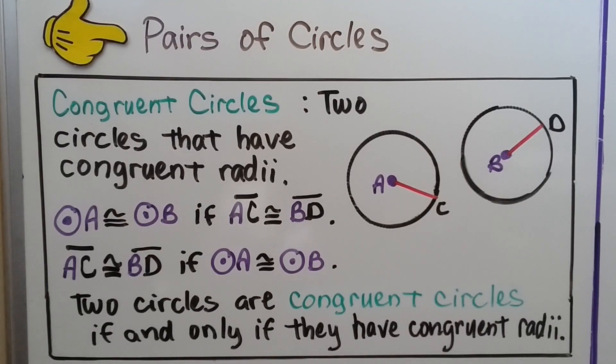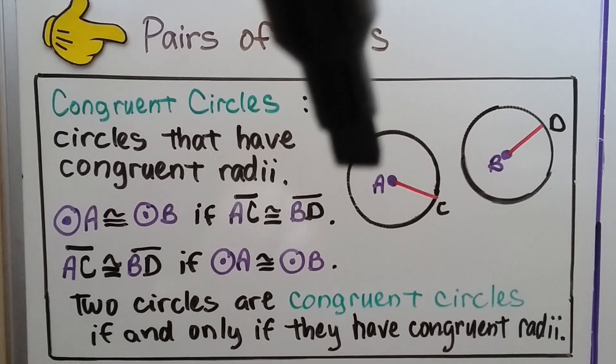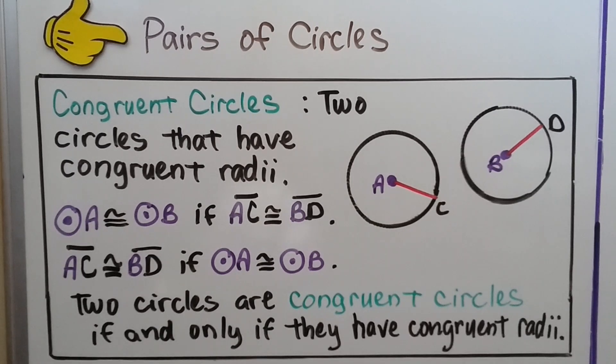For your notes, congruent circles are two circles that have congruent radii. Circle A is congruent to circle B if segment AC is congruent to segment BD. And the converse, segment AC is congruent to segment BD if circle A is congruent to circle B. Two circles are congruent circles if and only if they have congruent radii.